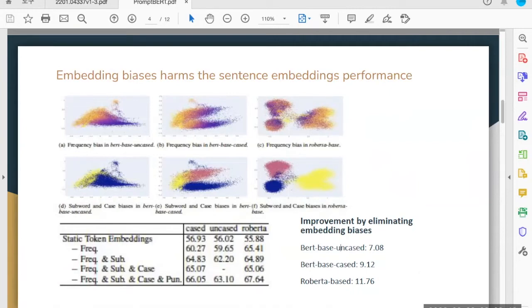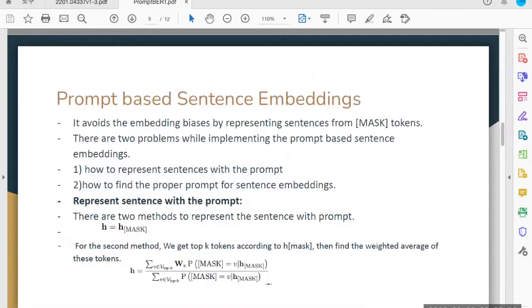The numbers on the table are Spearman correlation and all three models improved when eliminating the embedding biases.